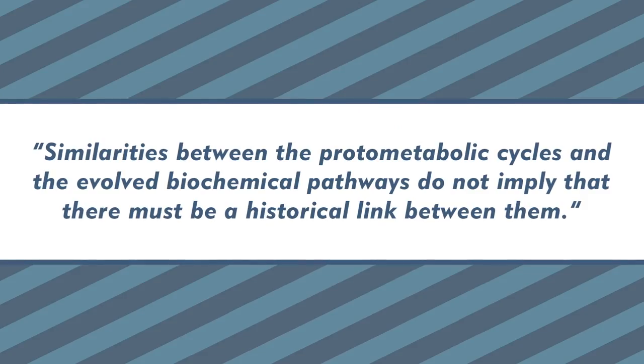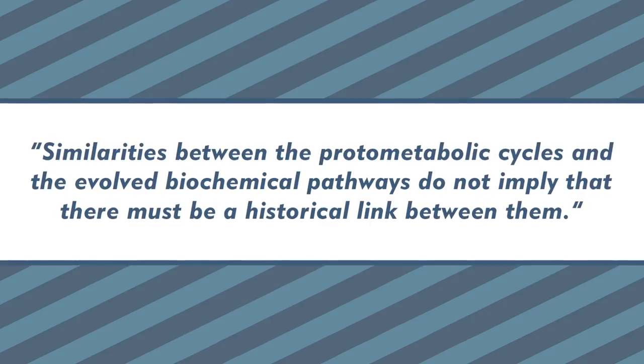Yes, the team was able to produce amino acids from starting molecules that we have evidence of existing on early Earth. But things like temperature and pH? We just can't really be sure about what the environment was like on early Earth. Plus, just because the team found cycles that could be precursors to the citric acid cycle doesn't mean those two cycles were absolutely what became what we know today. The results are just one possibility of prelife energy cycles that could have led to living energy cycles.